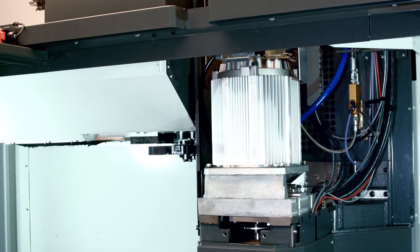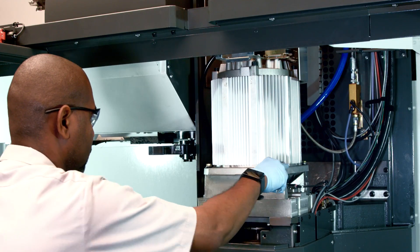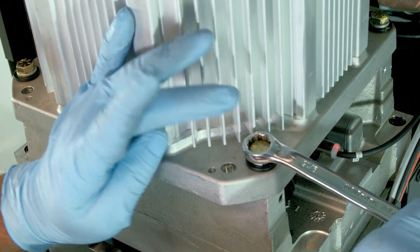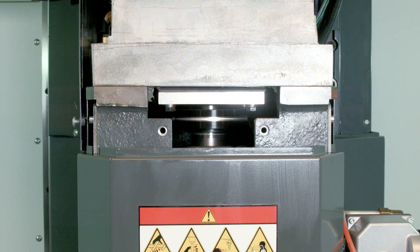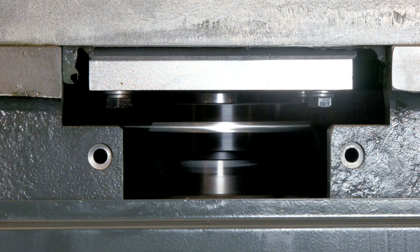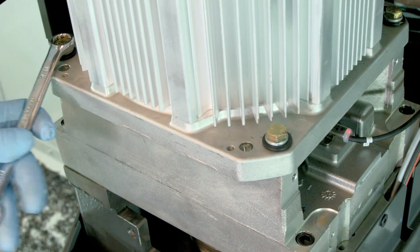First, check that the spindle motor is correctly aligned with the spindle. Break loose the motor mounting bolts and run the spindle at 750 RPM, allowing the motor to self-align. And then slowly tighten the bolts and torque them to spec.